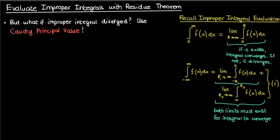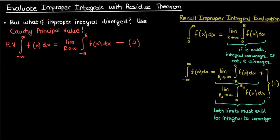The Cauchy principal value of an improper integral from negative infinity to infinity of f of x dx is found by replacing the infinite upper and lower bounds by some parameter R, and then taking the limit of the entire integral as capital R approaches infinity. I'm going to call this equation two.